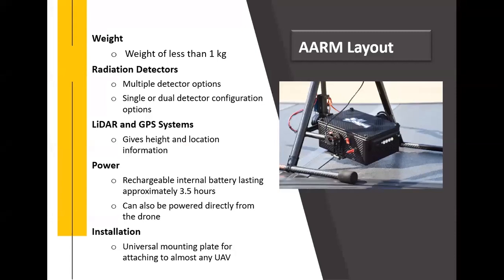The ARM system weighs less than one kilogram and incorporates a radiation detector with multiple detector options available, including high resolution spectroscopic detectors. Single or dual detector configuration options are available depending on need. There are built-in LiDAR and GPS systems providing height and location information. Different power options include a rechargeable internal battery lasting approximately three and a half hours on a single charge. The ARM system can also be powered directly from the drone, and the universal mounting plate makes it easy to install on any existing drone.